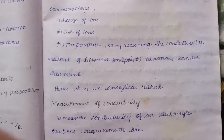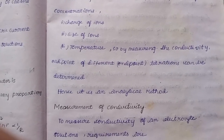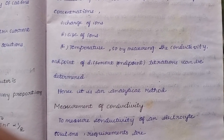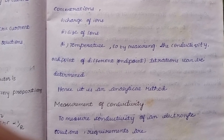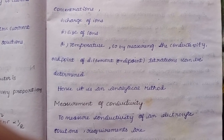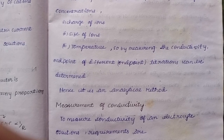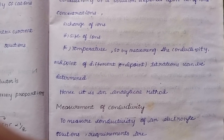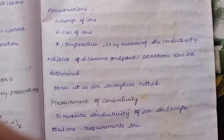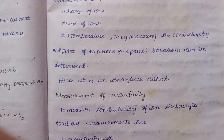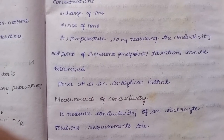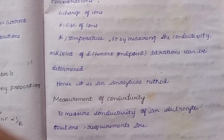By measuring the conductivity, the end point of different titrations can be determined. In every video you will see precipitation titrations, conductivity titrations, potentiometric titrations, and more — these are all types of analytical techniques that use conductivity values.